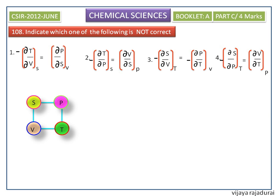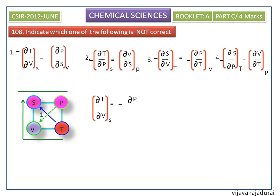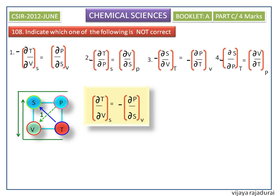Consider the left side of the square marked as 1, and draw the diagonals towards 1. The partial derivative of T with respect to V at constant S — since this diagonal is in the downward direction, we put a negative sign — equals negative partial derivative of P with respect to S at constant V. This Maxwell equation matches the first option, so the first option is a correct Maxwell equation and is not the answer.